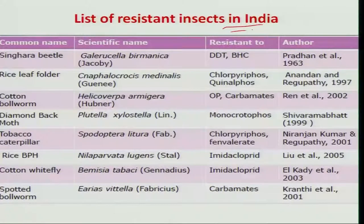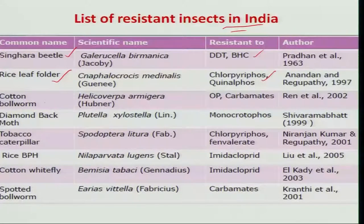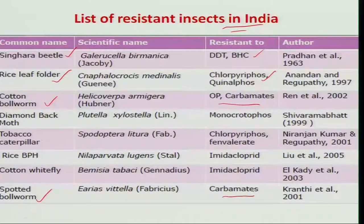Similarly in India, the resistance report started from the Singara beetle showing resistance to DDT from the Delhi area. Then in the paddy ecosystem, rice leaf folder showed resistance to two OP compounds — chlorpyrifos and quinalphos. Then cotton bollworm Helicoverpa armigera showed resistance to OP compounds, and spotted bollworm showed resistance to carbamate in the cotton ecosystem. Like that, the list went on increasing day after day.